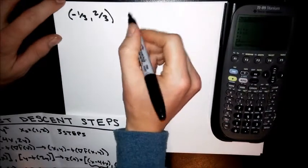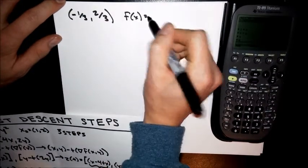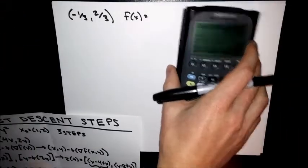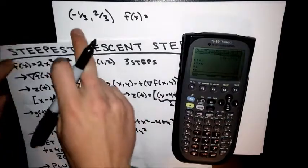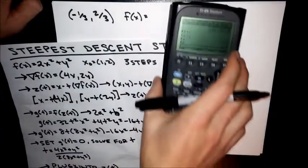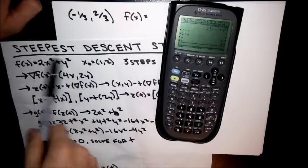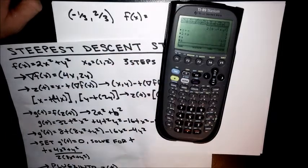Well actually we can also find our F of X. And our F of X was 2X squared plus Y squared. So we can plug in these values into our F of X. And you could do it with 1 and 2 also. And that would be considered your first step. So this would be step 2 I guess.